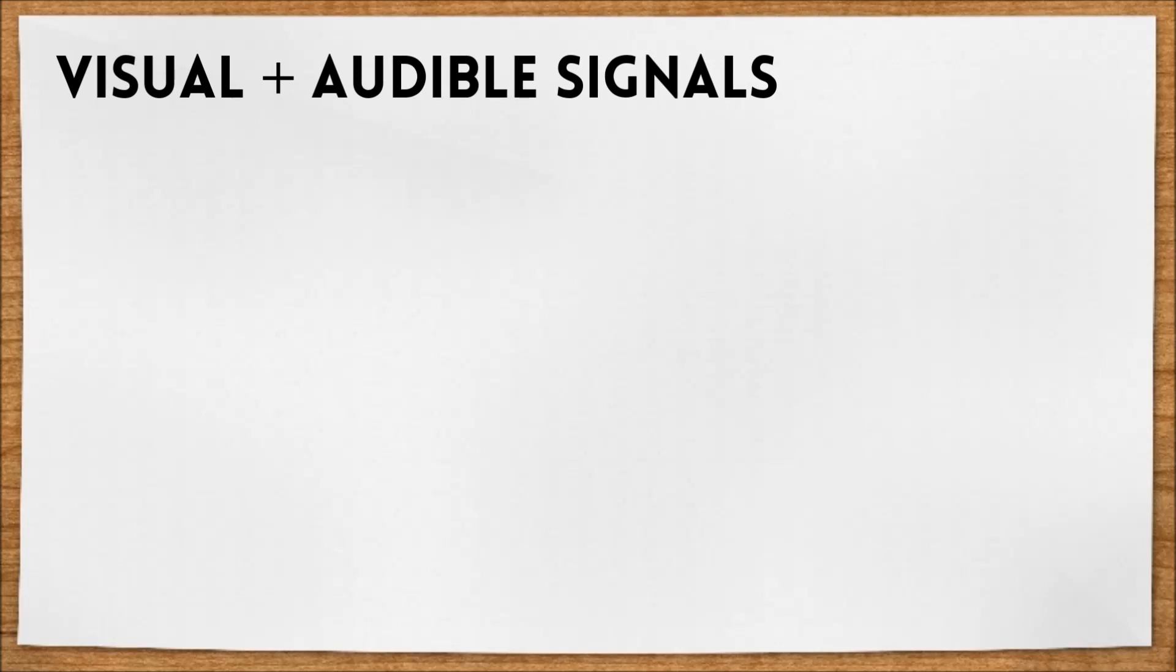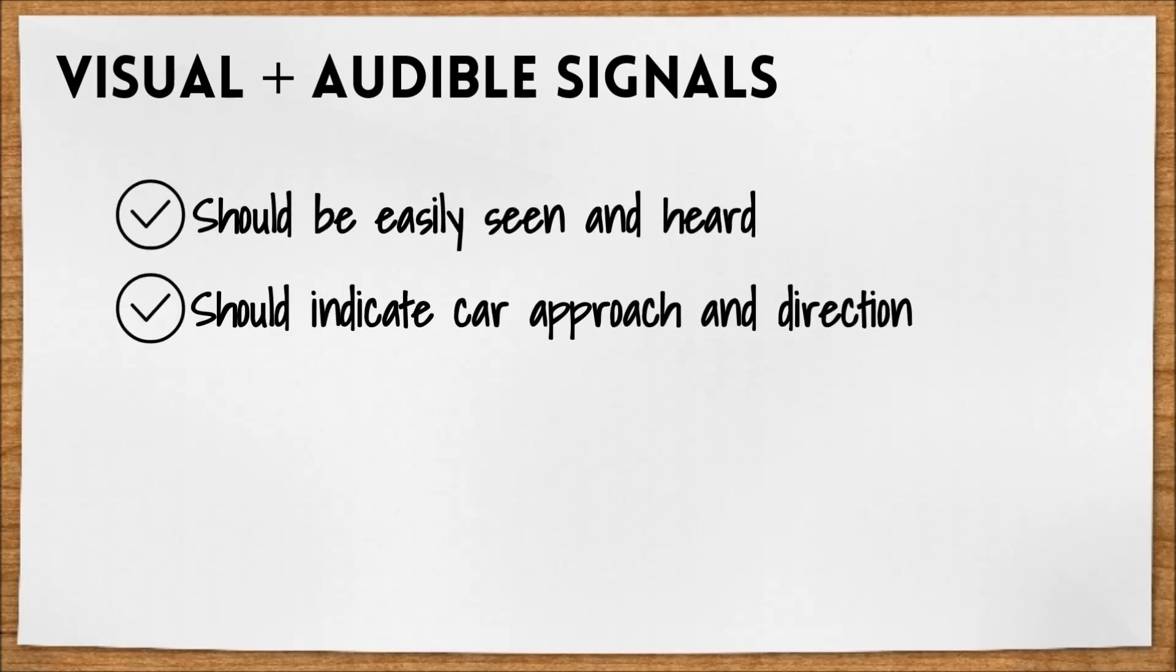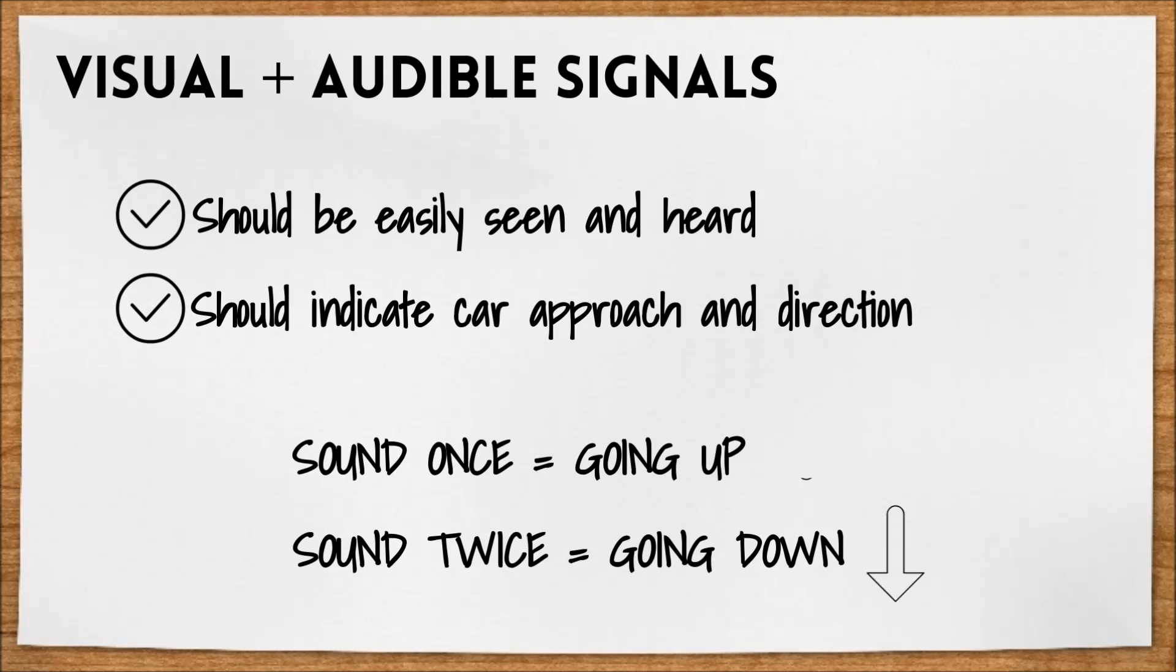Visual signals should be easily seen, and audible signals must indicate car approach and whether it's moving up or down. The elevator should sound once if going up and twice if it's going down.